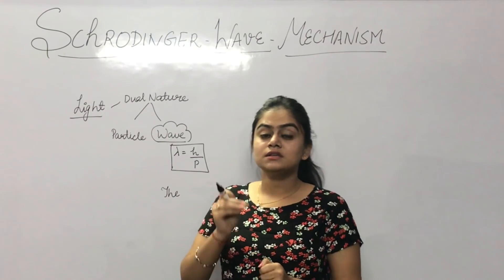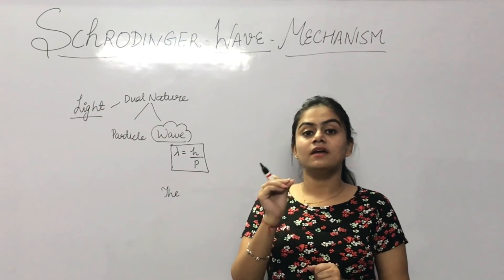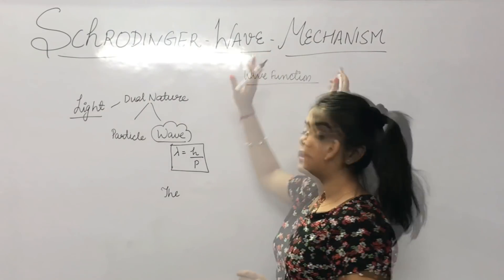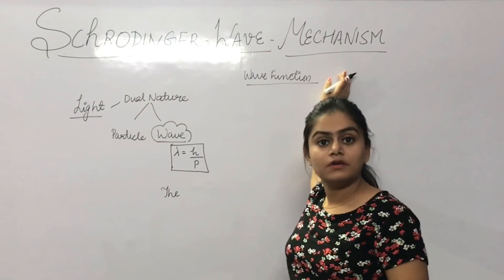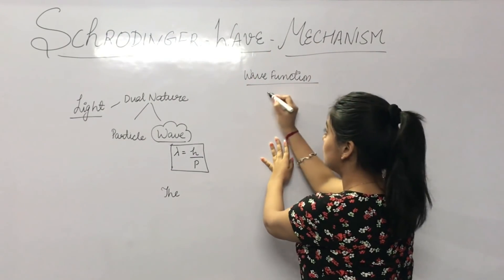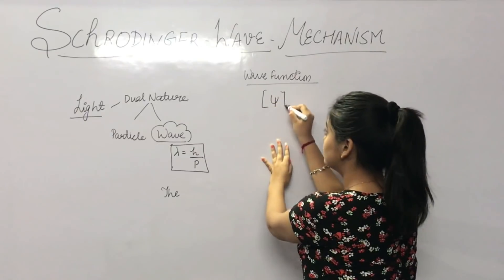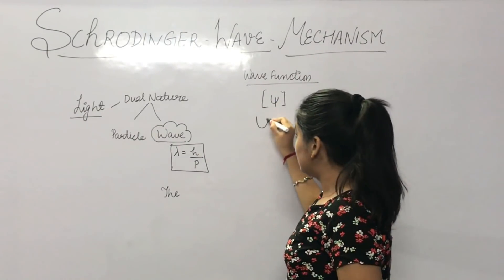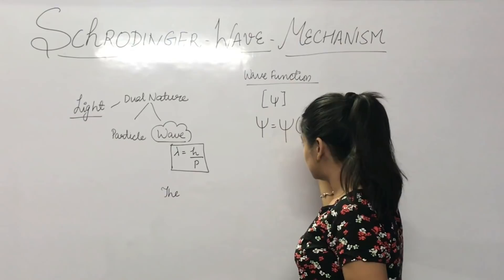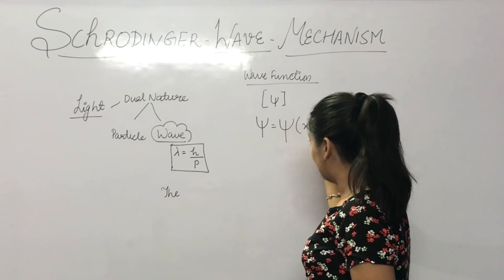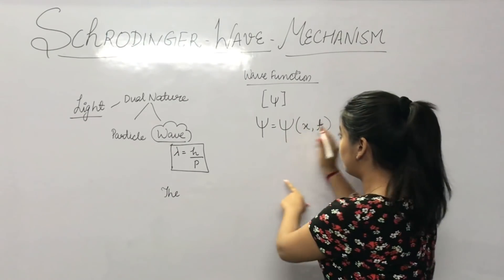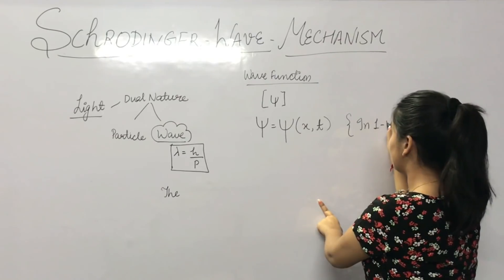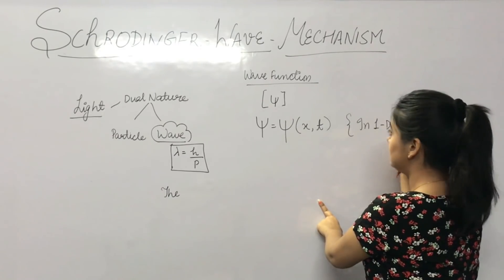The waves associated with the electromagnetic field are known as electromagnetic waves. So there is a wave associated with each and every particle of this universe. In wave mechanics, we will introduce a wave function. The wave function is denoted by Psi. Psi is a function of position and time. In 1D we can write Psi as a function of x and t.